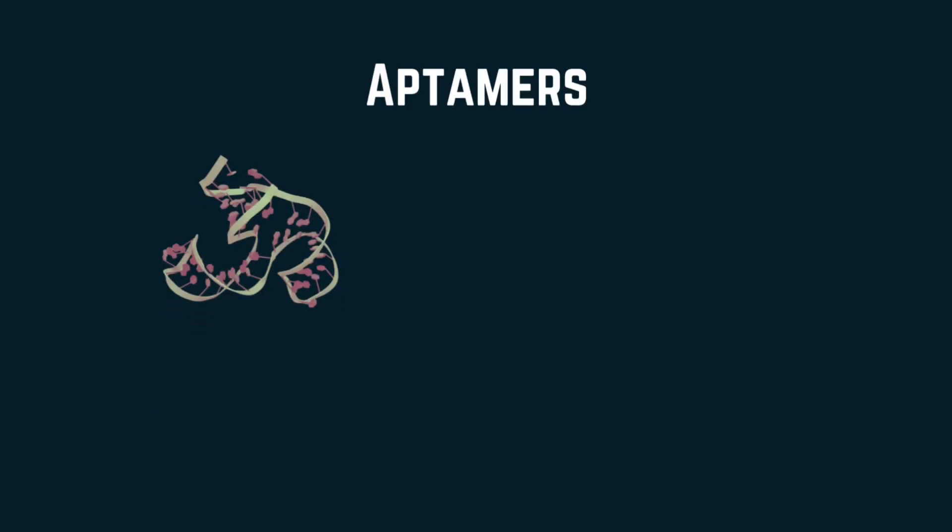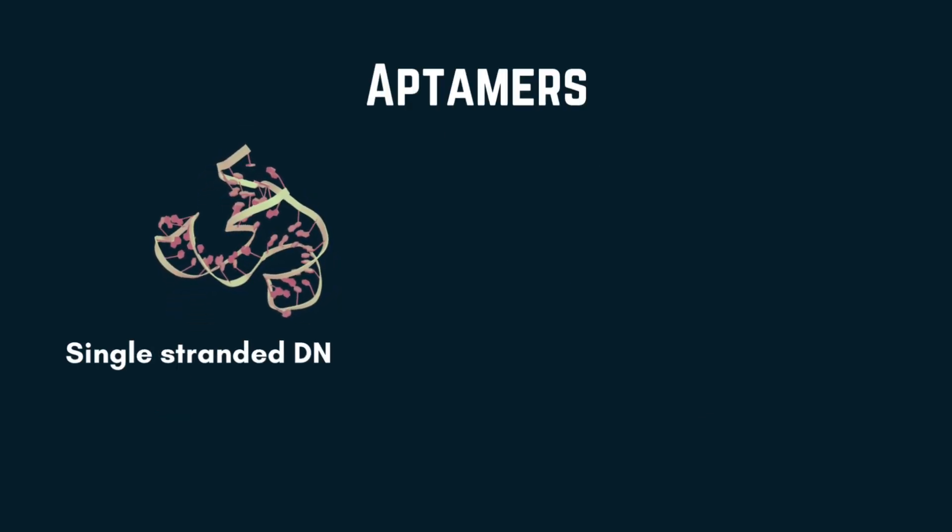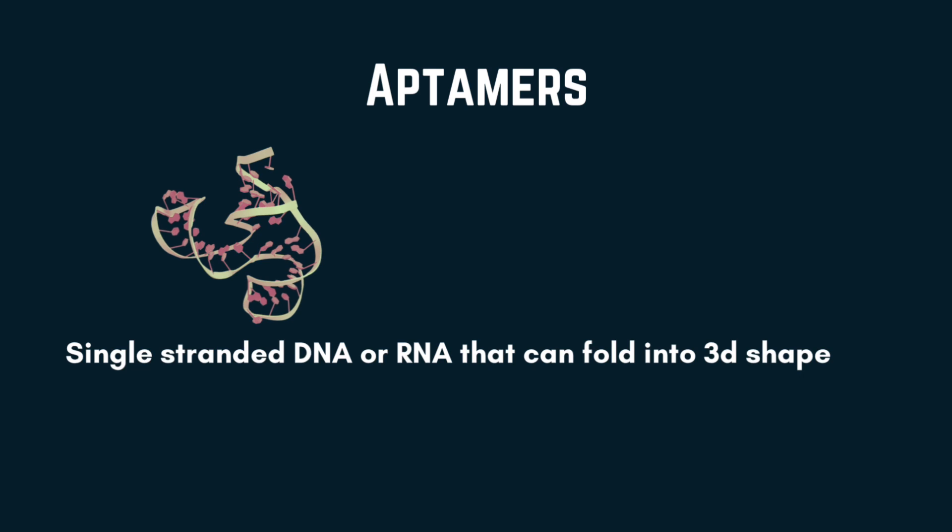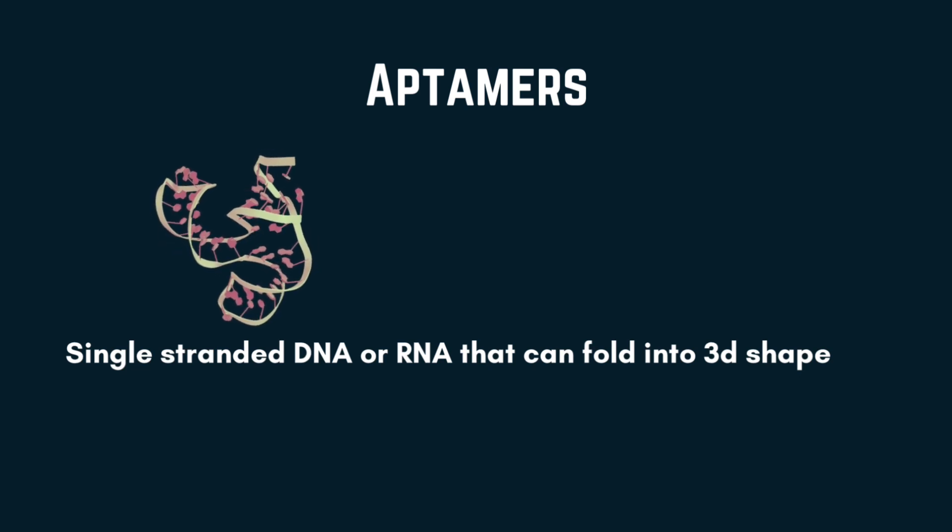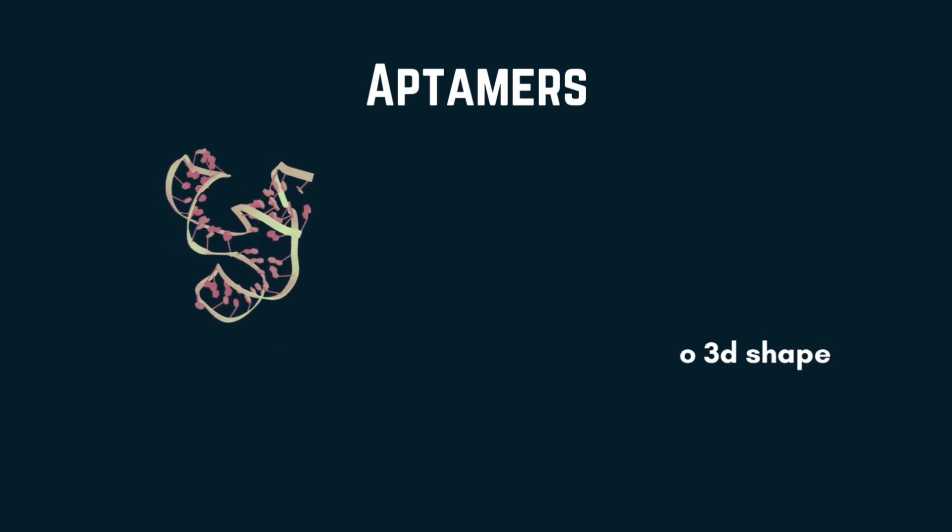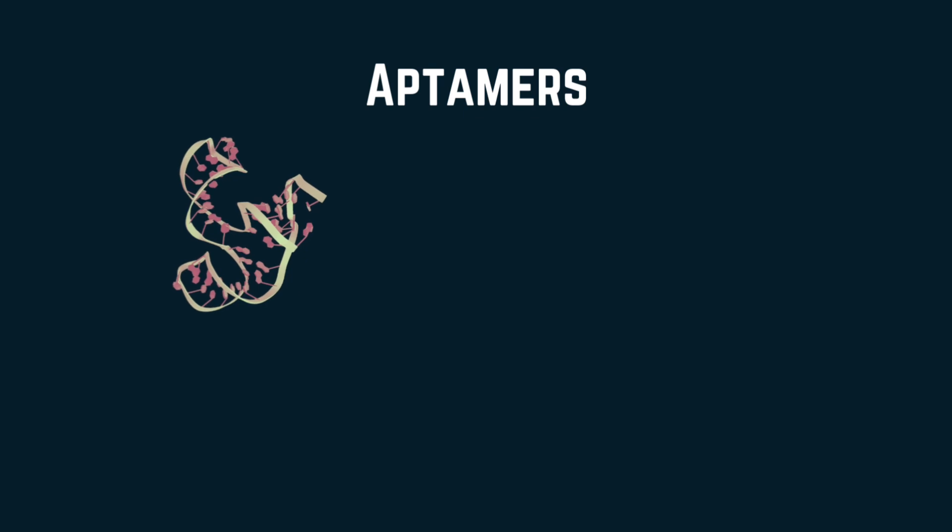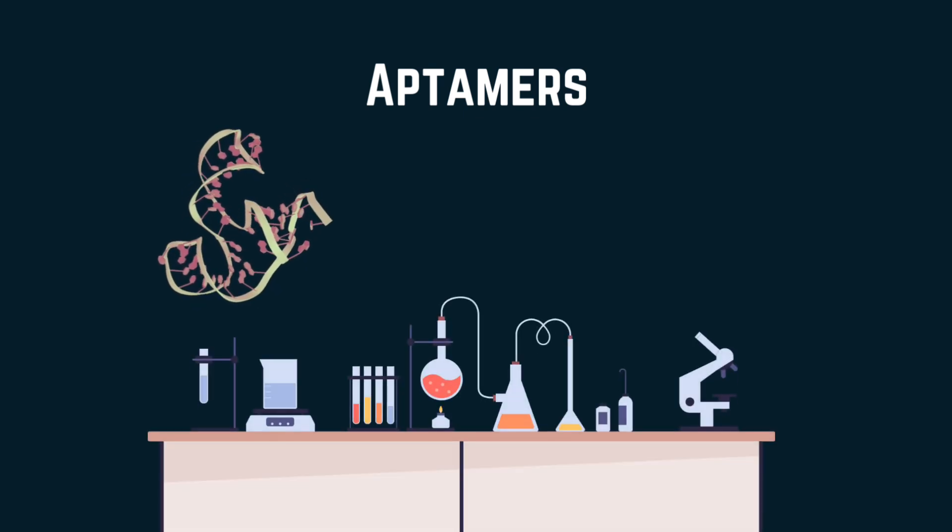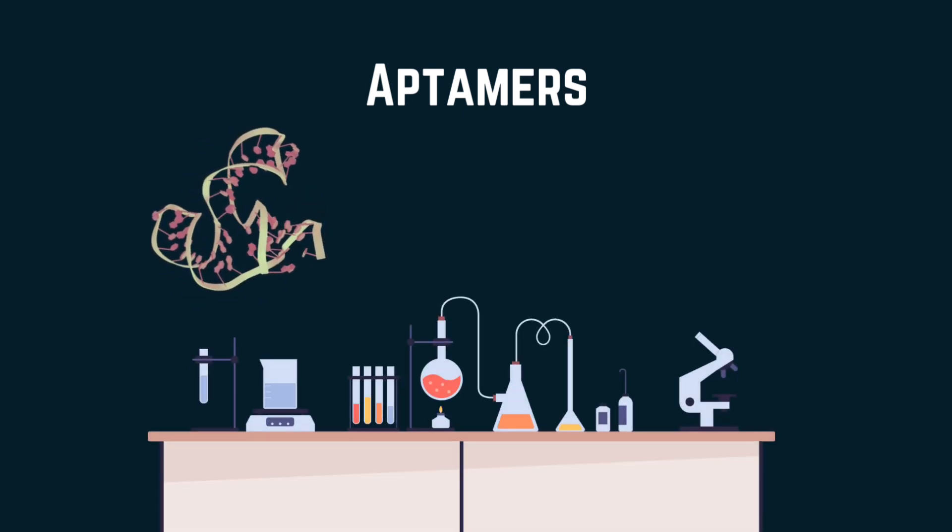Moving to aptamers. Aptamers are short single-stranded DNA or RNA that can fold into 3D shapes, allowing them to bind specifically to targets like antigens. They are often referred to as chemical antibodies because of the way they are produced, which will be explained later.